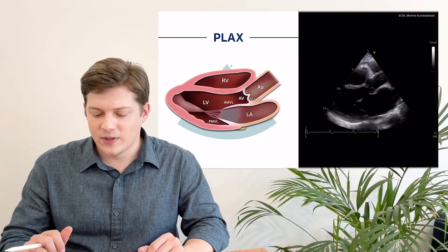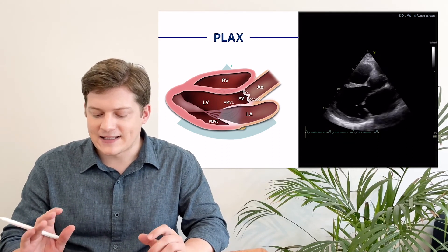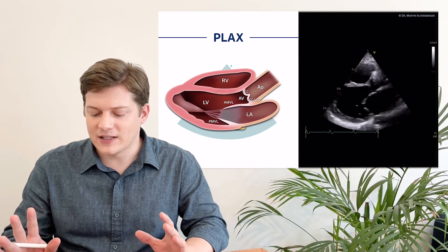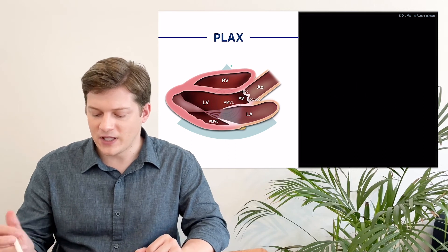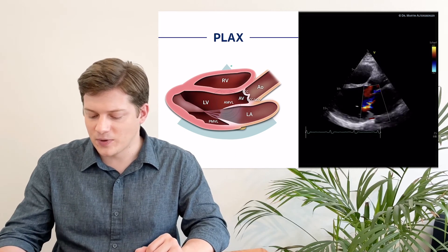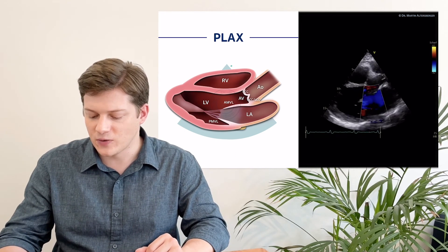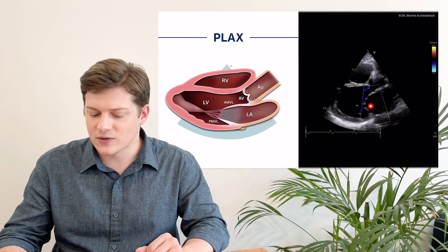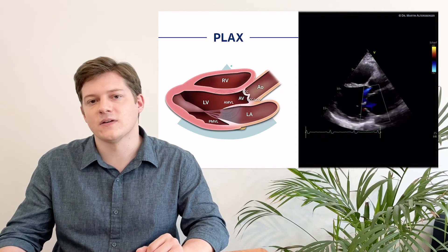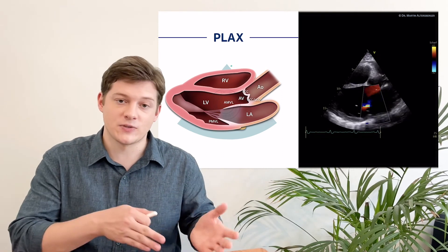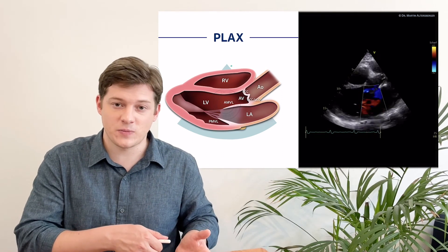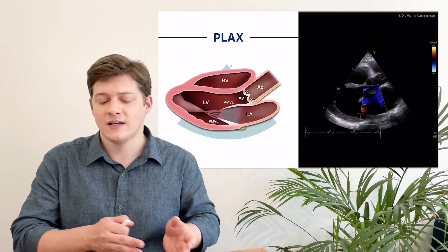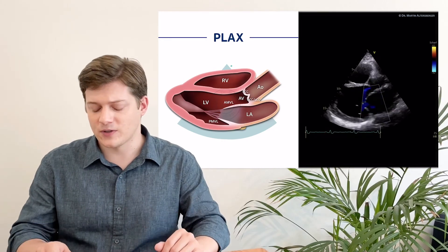If we add color Doppler, we get even more information. We do see a regurgitation here and a regurgitation here — so there is mitral regurgitation present and aortic regurgitation.